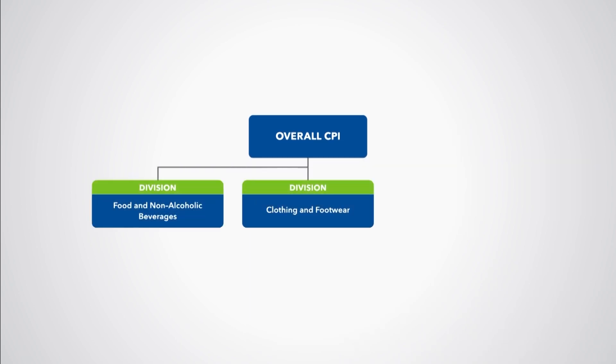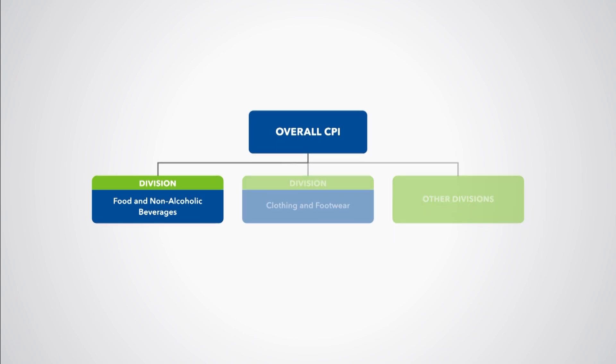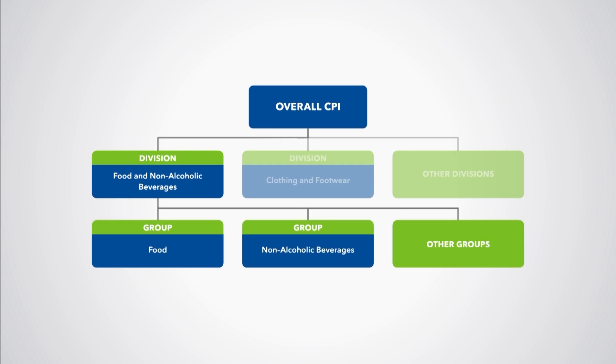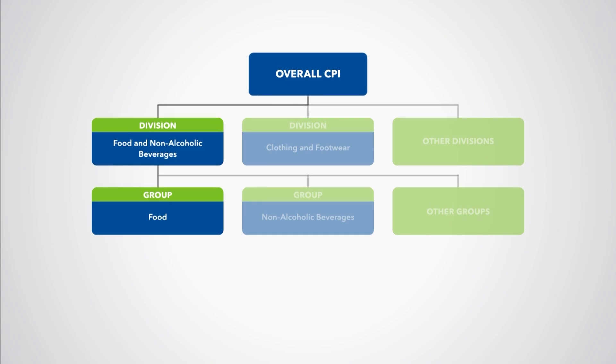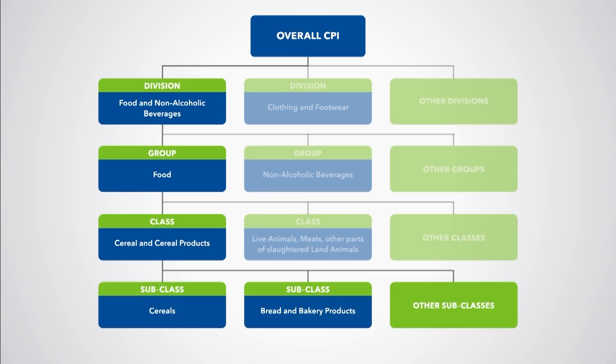Let's now unpack the aggregation structure of a CPI. Using a classification of consumers' expenditure, such as the Classification of Individual Consumption According to Purpose, or COICOP, the entire set of consumption goods and services covered by the overall CPI can be divided into divisions, such as food and non-alcoholic beverages. Each division is further divided into groups, such as food. Groups are divided into classes, such as cereals and cereal products. Classes are further divided into subclasses, such as cereals.